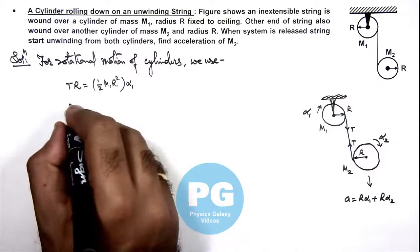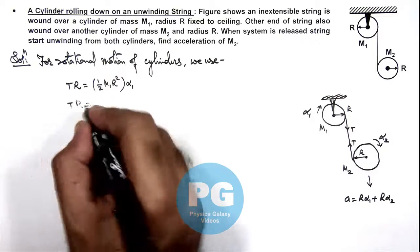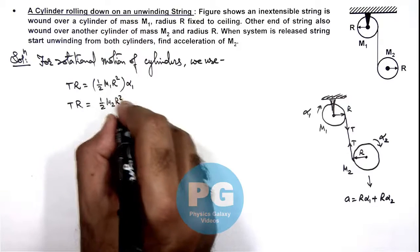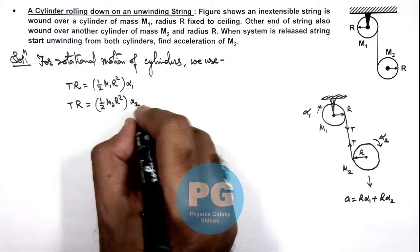And for the second cylinder we can write TR is equal to half m2 R squared multiplied by alpha 2.